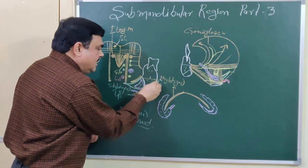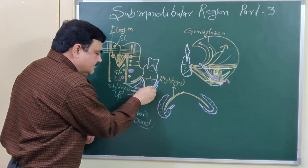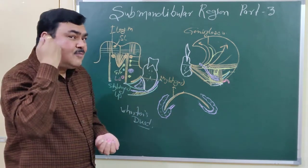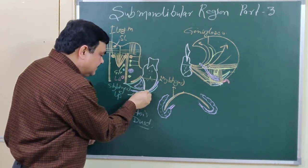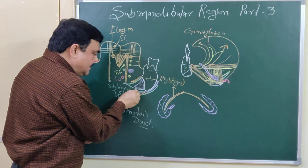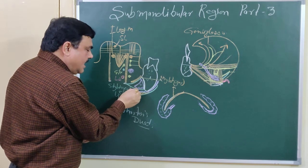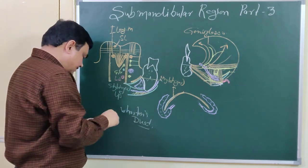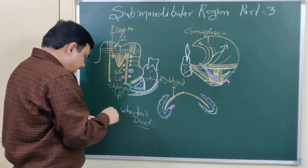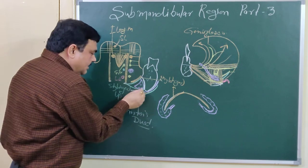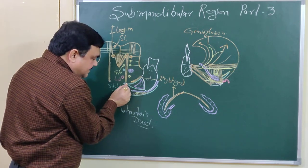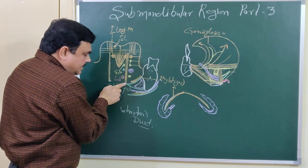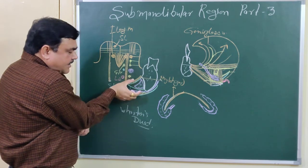Another structure here is the facial vein — the common facial vein. As you know, the facial vein joins with the anterior division of the retromandibular vein to form the common facial vein. So here is the facial vein, or common facial vein.